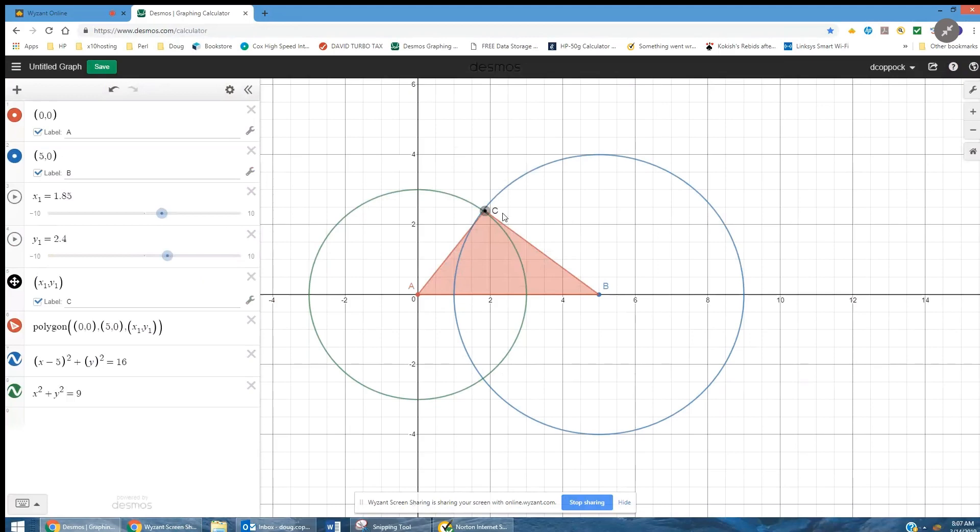X sub 1, Y sub 1 is actually a moving point. But I graphed the equations of the two circles. And if I put C on the current X sub 1 value, it looks like that's where we want to be.